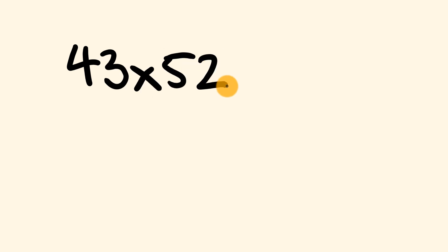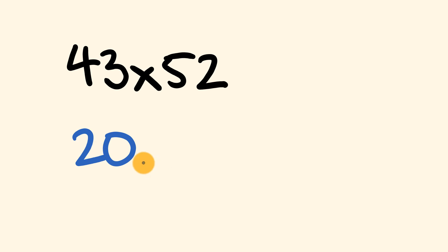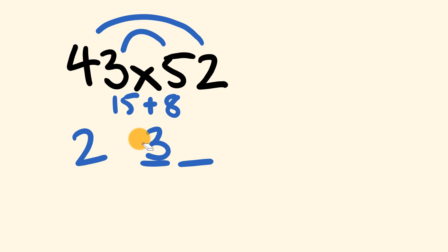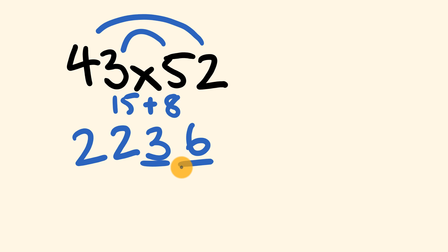Let's try bigger numbers: 43 multiplied by 52, using rainbow multiplication first. We go 4 times 5 equals 20 — that's like 2000, so we write 20 with two spaces. For the tens part: 3 times 5 is 15, and 2 times 4 is 8 — adding gives 23, so 3 goes here and we carry the 2. Finally, the units: 3 times 2 is 6. Answer: 2236.